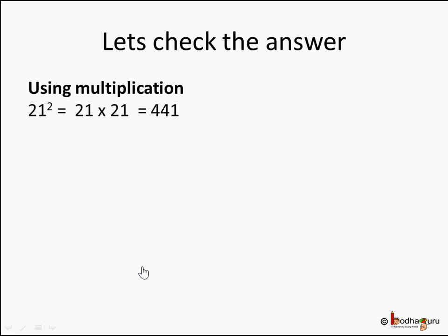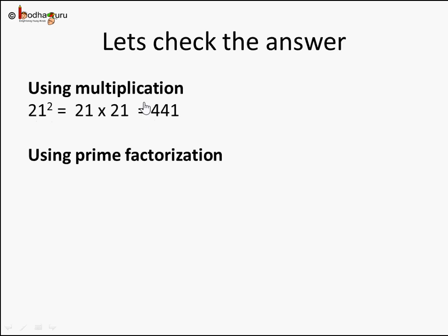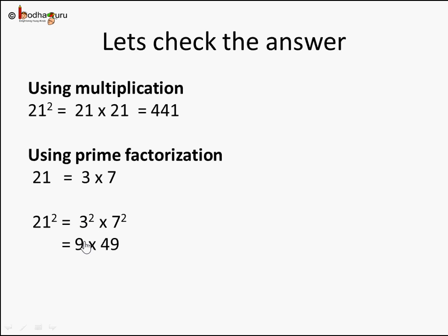Let's verify this answer. We square 21 and see whether we get the original number. 21 squared is 21 into 21, and if you calculate that you get 441. So the square root of 441 is 21, and 21 squared equals 441, confirming 21 is the correct answer. Using prime factorization: the prime factors of 21 are 3 and 7, so 21 squared equals 3 squared into 7 squared = 9 into 49 = 441. We got back the original number.